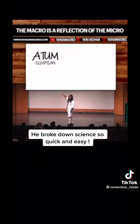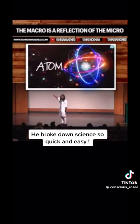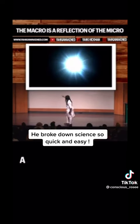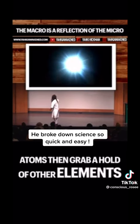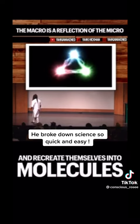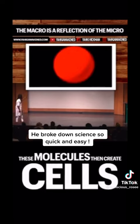Y'all get that? Atum. All religions come from the body. First, you got atoms. Atoms then grab a hold of other elements and create themselves — called molecules. These molecules then create cells.